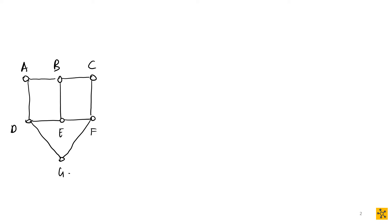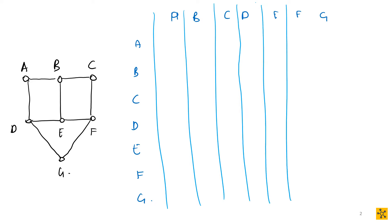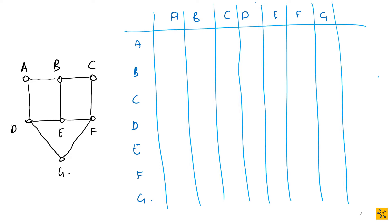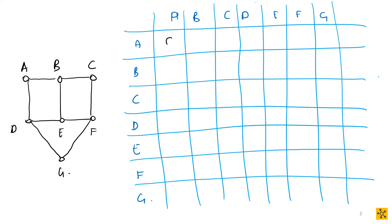Remember when we set up adjacency matrices — you have your rows labeled A, B, C, D, E, F, G and your columns labeled A, B, C, D, E, F, G. You put a one wherever there is an edge between two vertices and a zero where there isn't. You should by now be very comfortable drawing up this adjacency matrix — you may want to freeze the video and double-check that you can do this.